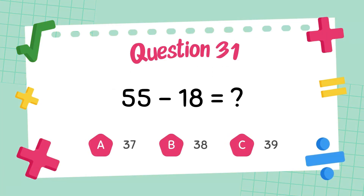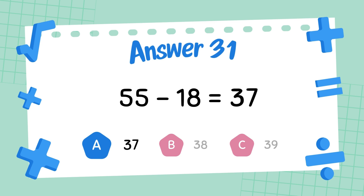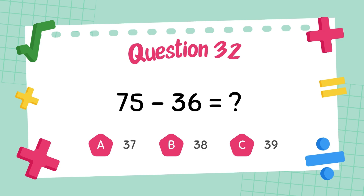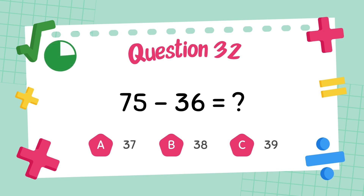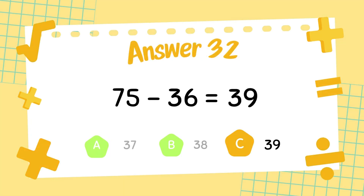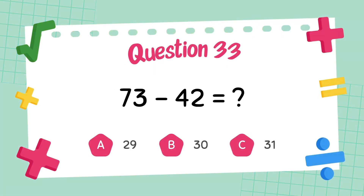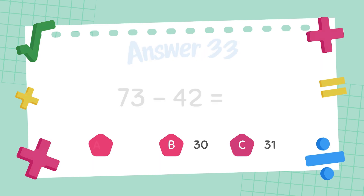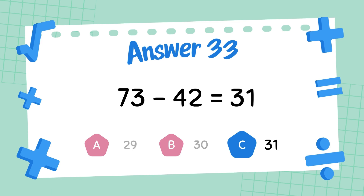What is seventy-five minus thirty-six? The answer is thirty-nine. What is seventy-three minus forty-two? The answer is thirty-seven.